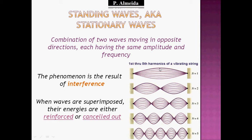I'll say the name now: antinodes. N1, first harmonic, one antinode. N2, second harmonic, two antinodes. N3, three antinodes. N4, four antinodes. N5, five antinodes. So the number of antinodes is going to tell you which harmonic you are in.